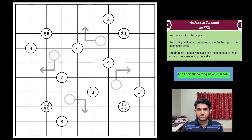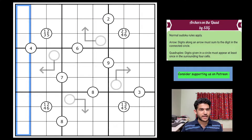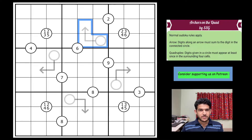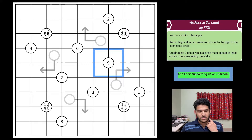This sudoku is called 'Arches on the Quad' and it has a combination of arrow and quadruple rules. Standard classic rules apply — each row, each column, and three-by-three box has digits one to nine. For the arrow rule, the digit in the circle is the sum of the digits along the arrow stem — for example, two plus three gives five. For the quadruple rule, digits given in a circle must appear at least once in the surrounding four cells. If there's a nine given, at least one of those four cells must contain a nine.